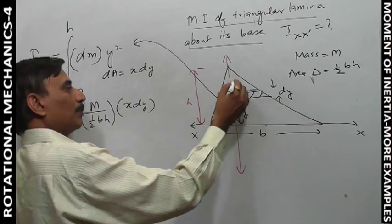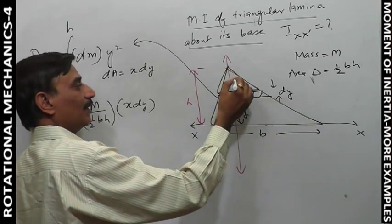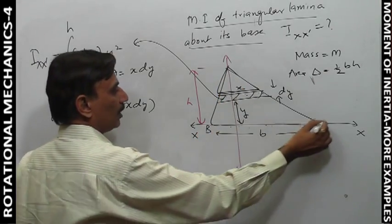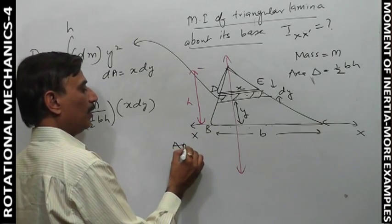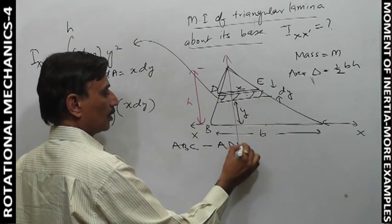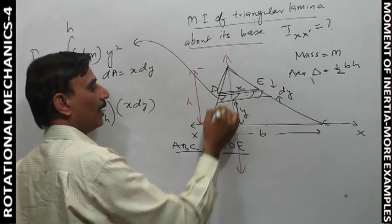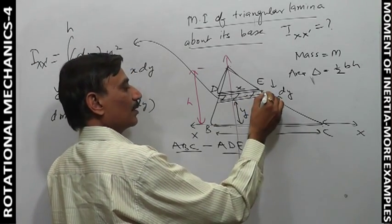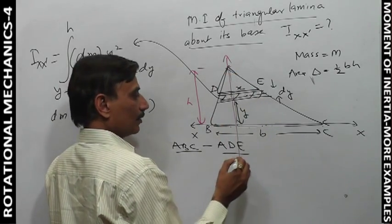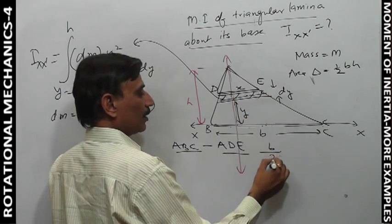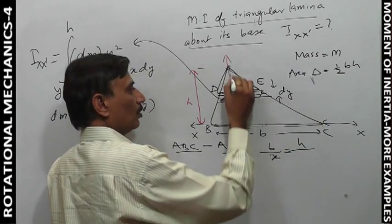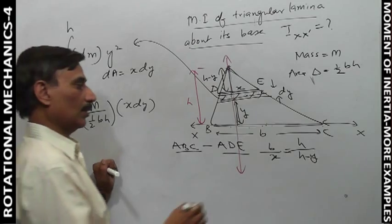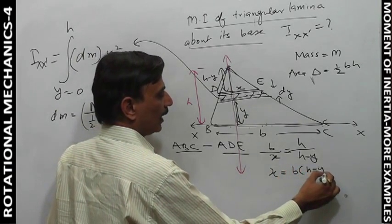We look at two triangles: the small triangle and the big triangle. These are similar triangles ABC. For similar triangles, base by base equals altitude by altitude. So b/x = h/(h-y).